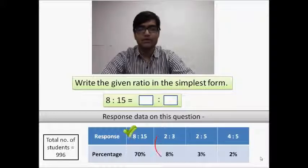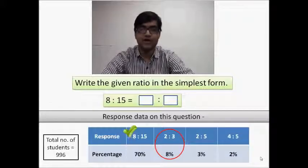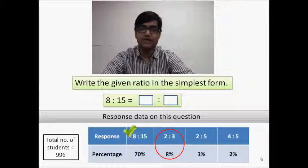However, around 8% reduced 8 and 15 by the factors 4 and 5 to get 2:3 as their answer. Others also reduced the terms by different factors to get answers like 2:5 and 4:5. Why is this?